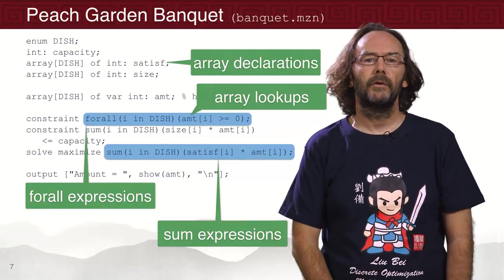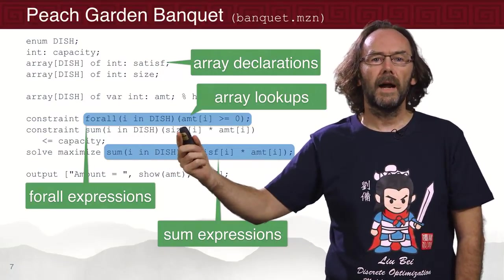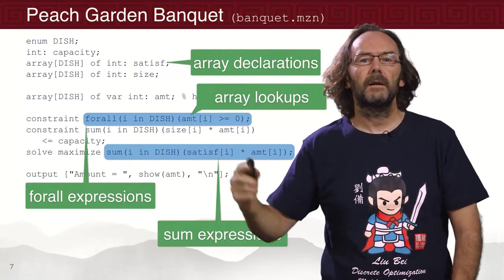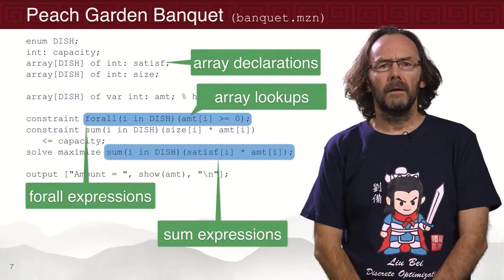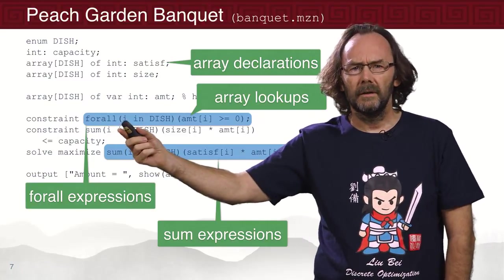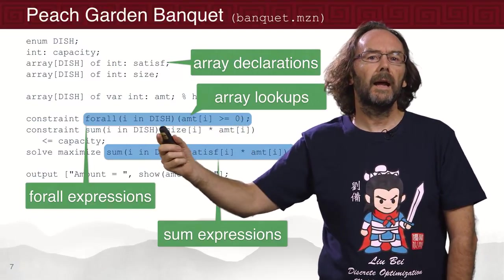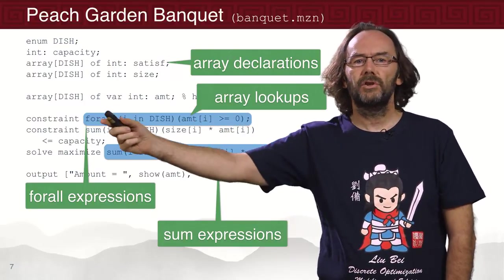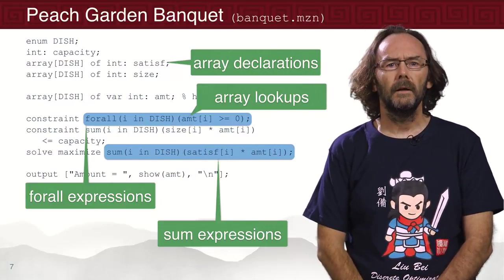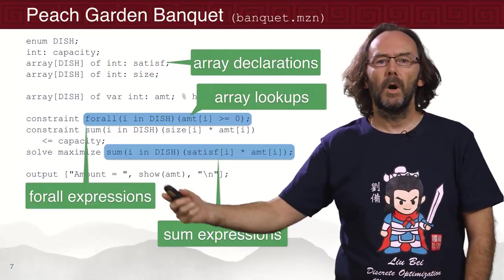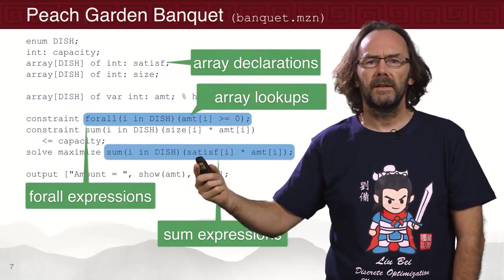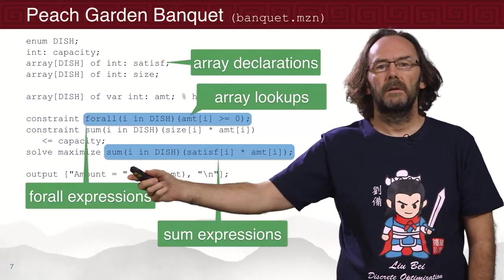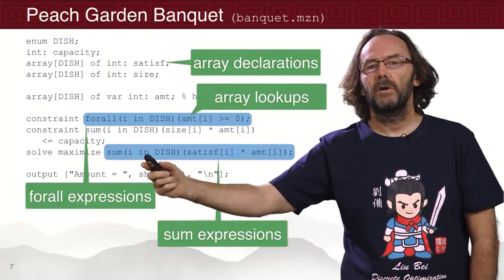We're introducing some new concepts here. First, we've got an array lookup: if I have an array 'amount', to get the amount for the ith dish, I just write amount[i], like you do in most languages. Next we have a forall expression: for all i in dish, the amount of i is greater than or equal to zero. This adds a constraint to every dish's amount, forcing it for each of the decision variables in the array. We also have a sum expression, summing over all the dishes the satisfaction for that dish times the amount of that dish, giving us the total satisfaction for the meal.